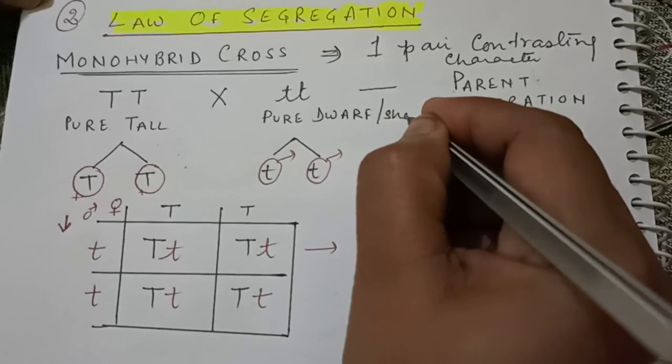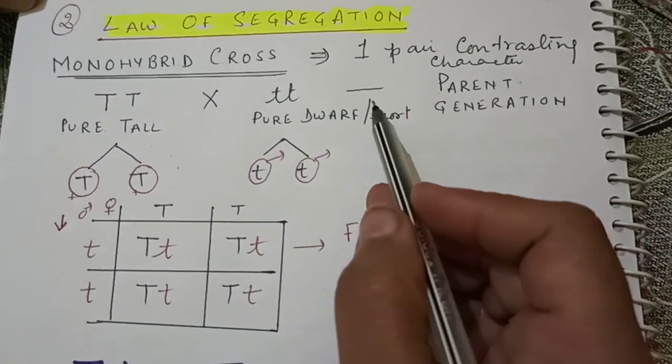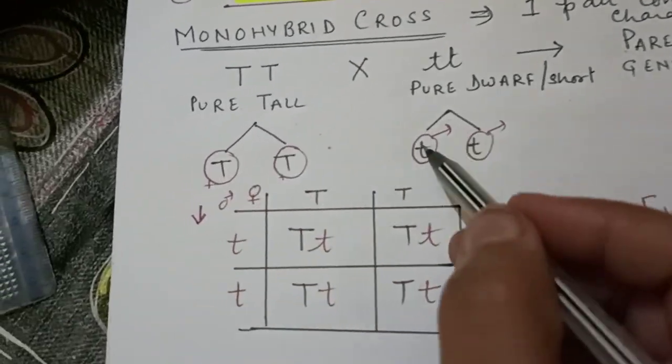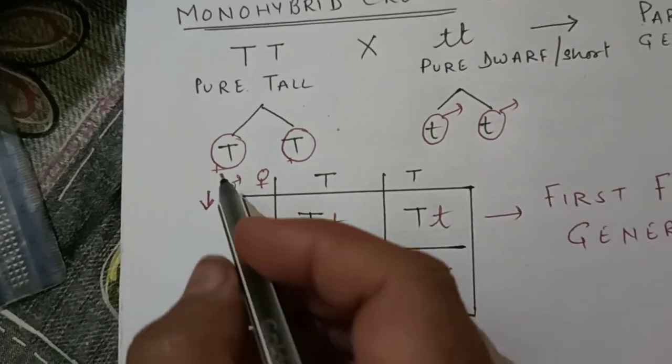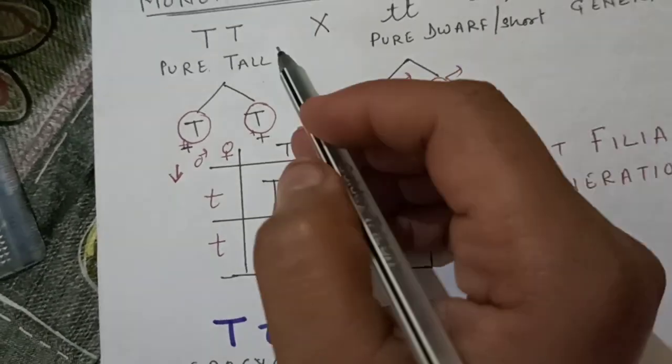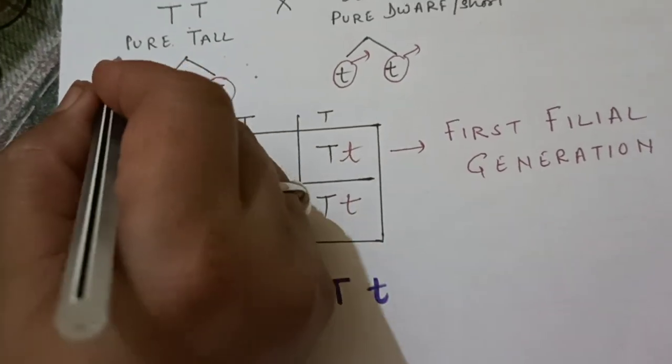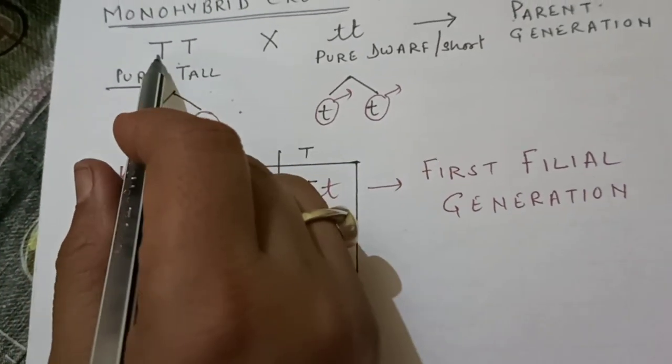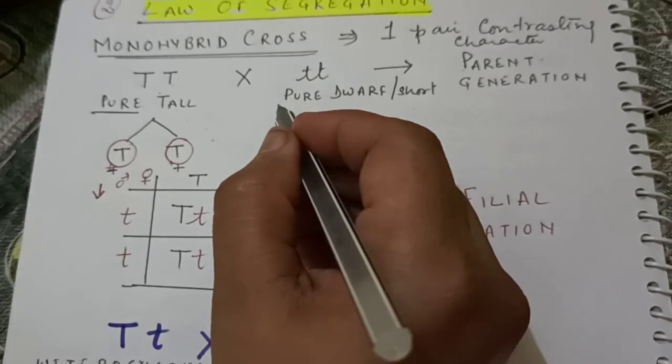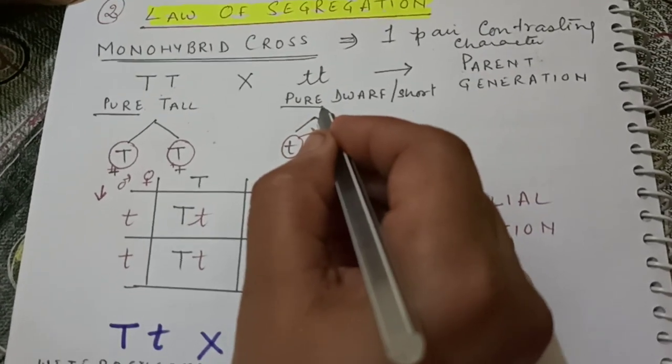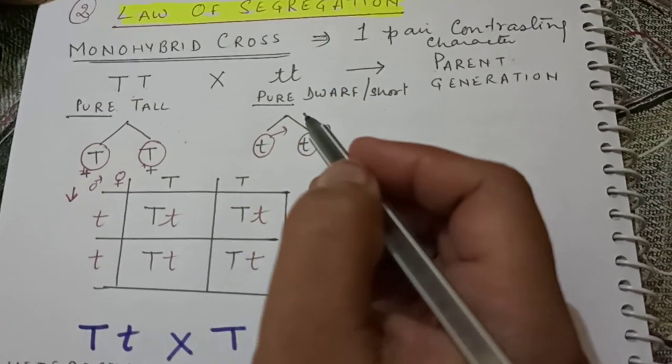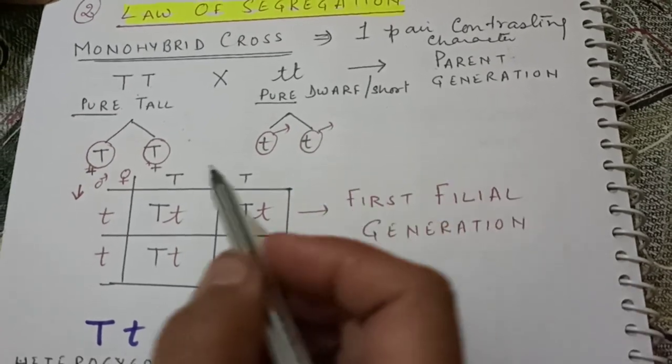It is indicated as parent generation. This positive sign is indicating female, this arrow is indicating male. The cross is between two pure plants. Pure means both the alleles are similar. Here also both the alleles are similar. Always keep it in your mind that the recessive trait will be visible in homozygous condition only.